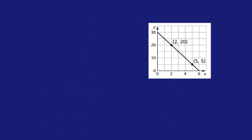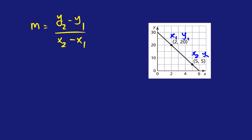Let's try one more. The slope formula is m equals y2 minus y1 divided by x2 minus x1. I'm going to call the first point x1 and y1, and the second point x2 and y2.